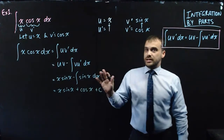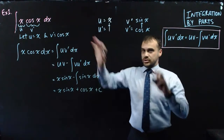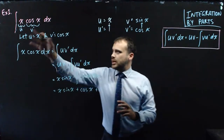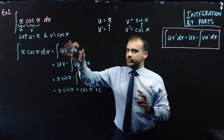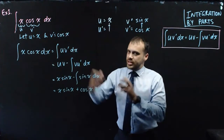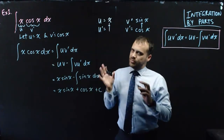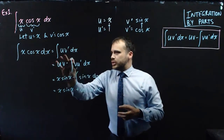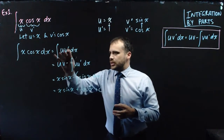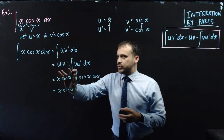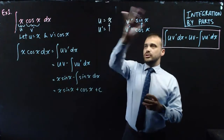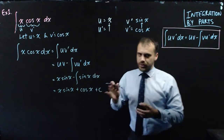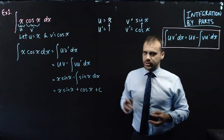That was integration by parts — that's the total thing. Really keep an eye on how I've set this out: it makes your life easier. Let the functions equal u and v', write down your formula, do a little bit of work on the side, put it all in, and we're done.